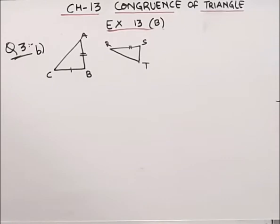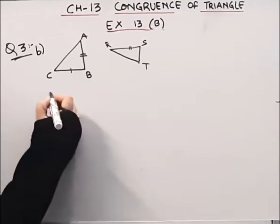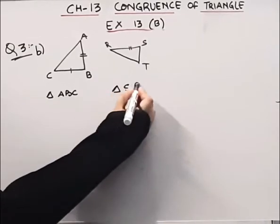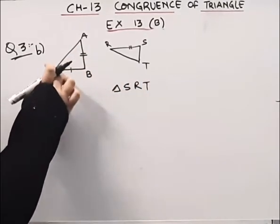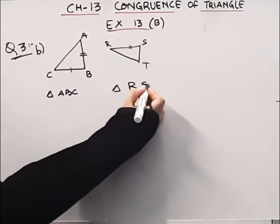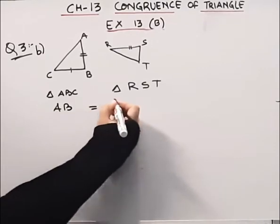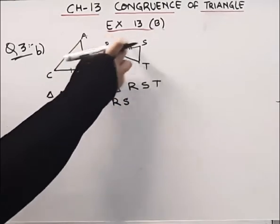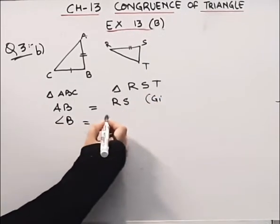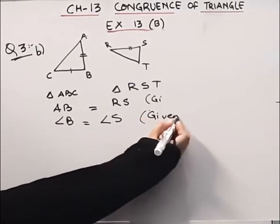Now in these two triangles, we have to find whether these two triangles are congruent or not. In triangle ABC and triangle RST, we have AB is equal to RS — this is given. Then we have angle B is equal to angle S, which is 90 degrees. This point is also given.